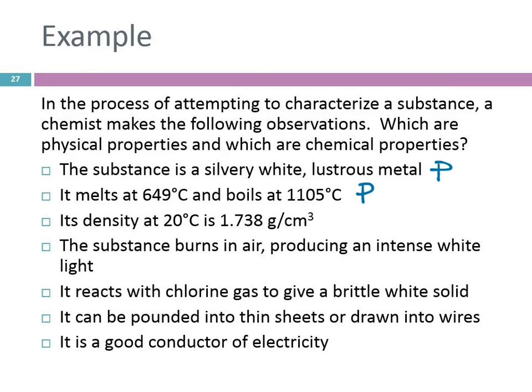Its density — physical. The substance burns in air producing an intense white light — chemical, there's something changing about it. It reacts with chlorine gas to give a brittle white solid — chemical. You can pound it into a sheet — physical. By doing that, are we changing the shape of the substance? Yes. Are we changing what it is? No. It's a good conductor of electricity — physical.